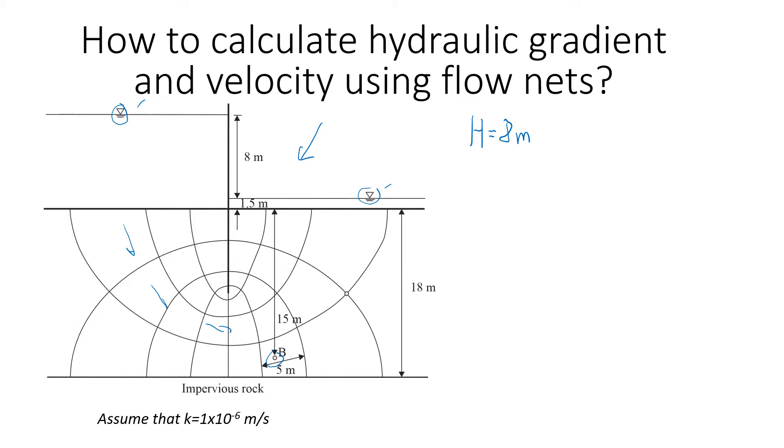The next step is to count the number of equipotential drops. We will start here because the seepage starts from this point, and then we finish here. I'm going to choose a flow channel somewhere in the middle, this one. We count number of drops: one, two, three, four, five, six, seven, eight. Because point B is in the channel below, let's also count the number of drops there. It should be also eight: one, two, three, four, five, six, seven, eight. So the number of drops is eight.